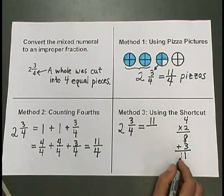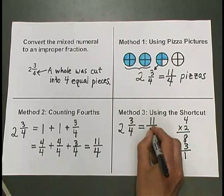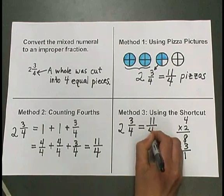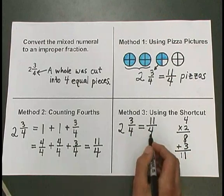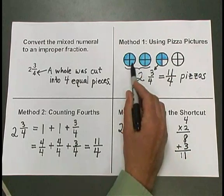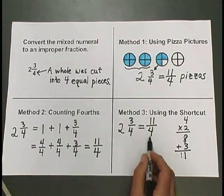And down below, I'm going to write my denominator as 4. The denominator stays the same because I'm still counting fourths. How many quarters or pieces of pizza, you could say, we have total.